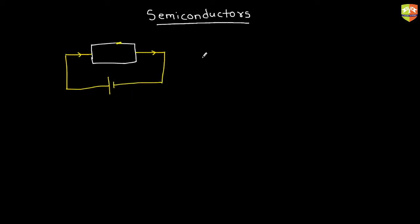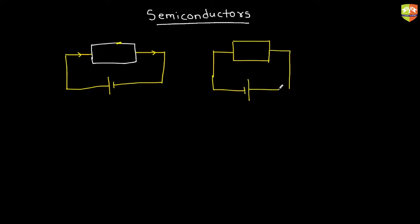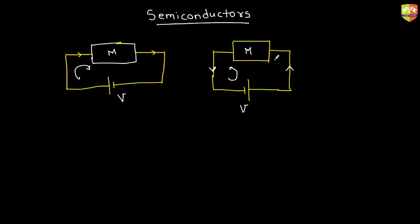So if you have a battery connected like this, the current will go in one direction. If you reverse the polarity, what will happen to the current? It will go in the opposite direction. So right now it is, let's say, clockwise — now it will become anti-clockwise.